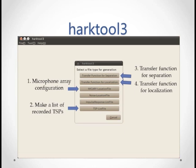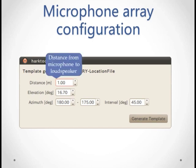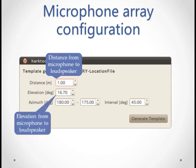First, click on the microphone array location file button. Here we need to tell the software about the microphone array used to record the impulse response. Set the distance of the loudspeaker from the microphone array here. Set the angle of elevation from the microphone array to the speaker here. A rough approximation is okay for most purposes. Finally, set the angle interval between the microphones. For example, in a regularly spaced microphone array with eight microphones, the interval is 360 divided by 8 or 45 degrees. When you're done, click Generate Template to save the file.